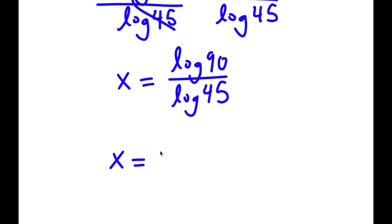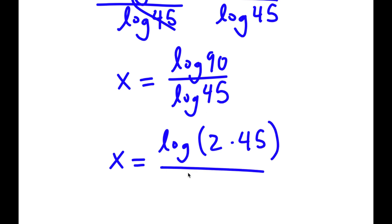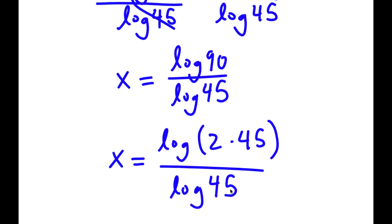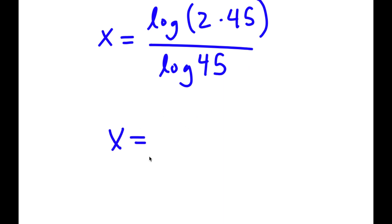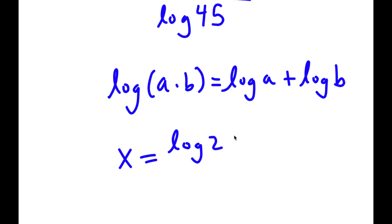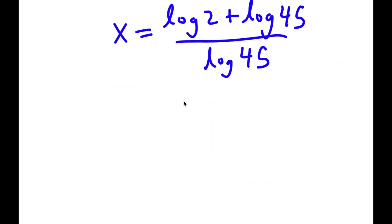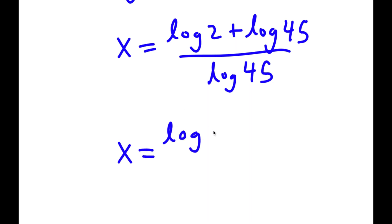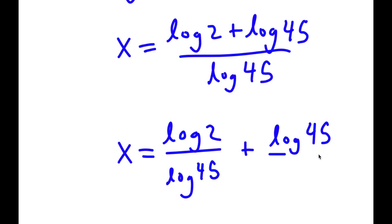Log 90 is the same thing as log of 2 times 45, so I have that over log 45. If I have something in the form log a times b, this is the same thing as log a plus log b. So now I have x is equal to log 2 plus log 45, all over log 45. This becomes log 2 over log 45 plus log 45 over log 45.